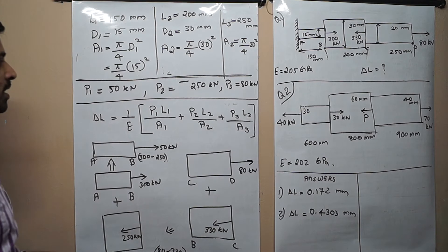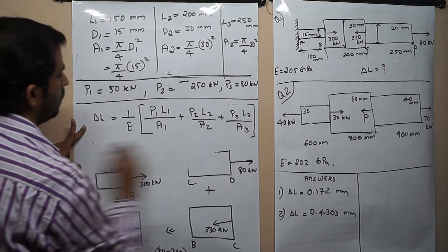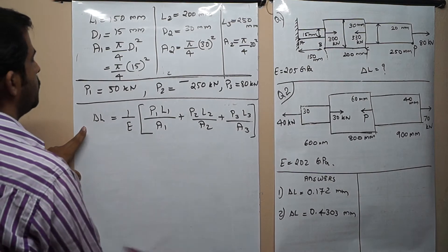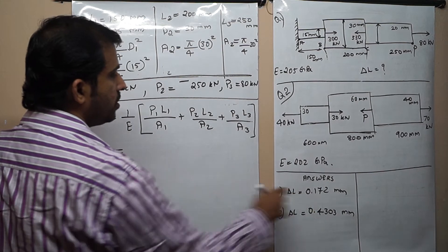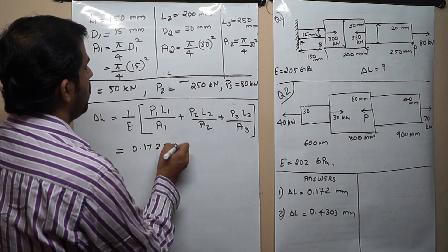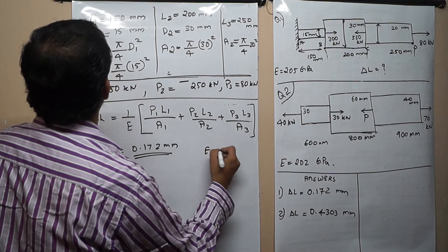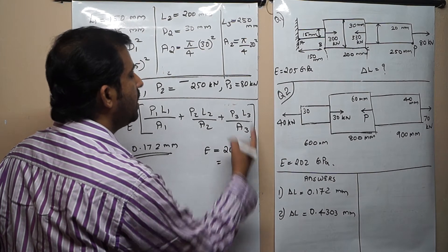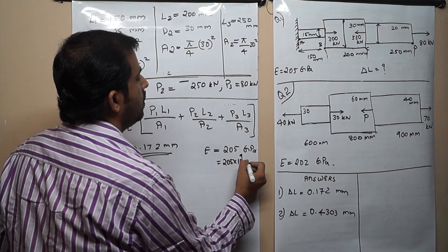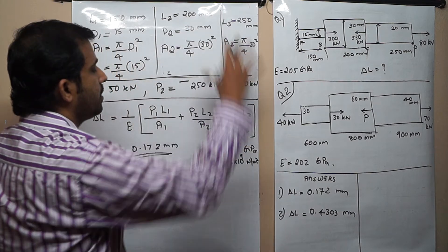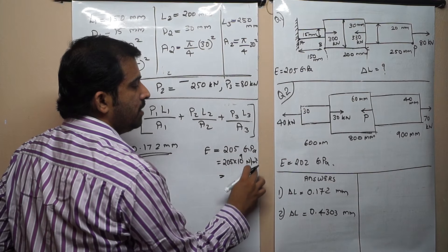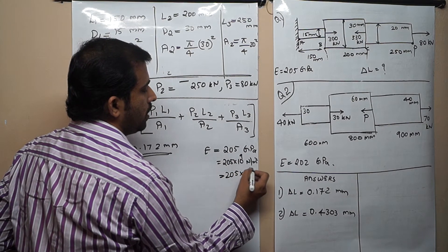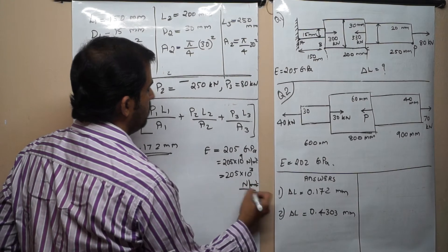Now we have all the loads. Substituting all the values into the superposition equation, we will get the answer 0.172 mm. Remember that E is given as 205 GPa. One Pascal equals 1 N/m², and giga is 10⁹, so 205×10⁹ N/m². Since all other dimensions are in millimetres, converting: E equals 205×10³ N/mm².